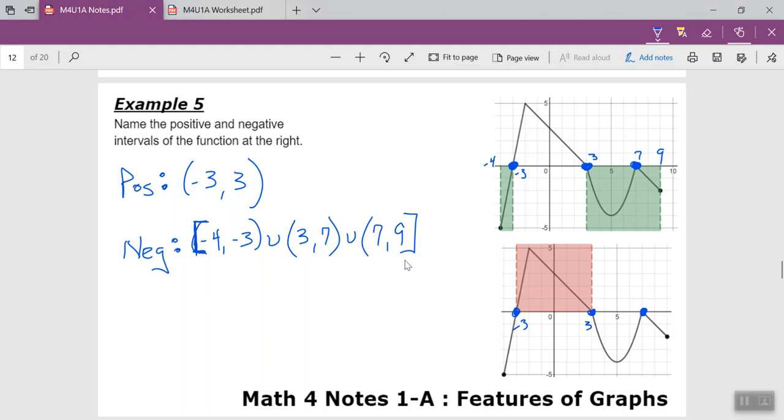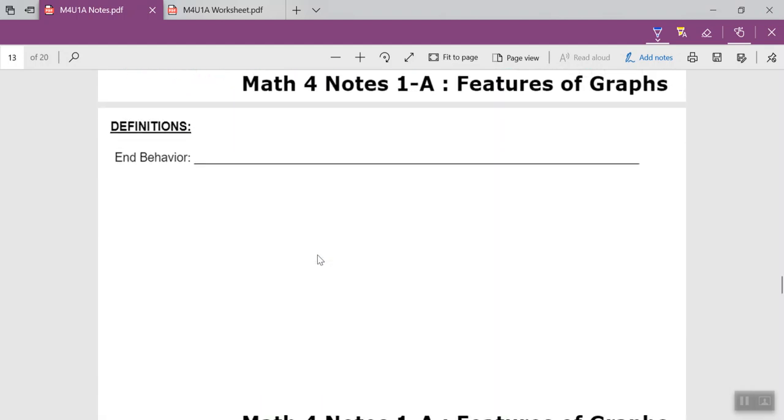There are actually technically three chunks that are negative here, and where x is 7 is actually breaking up one of the chunks, because when x is 7, y is 0, and that means it's not negative. All right, let's move on.